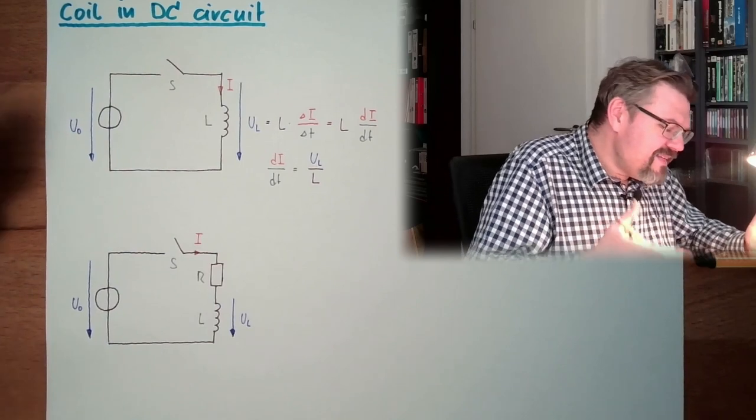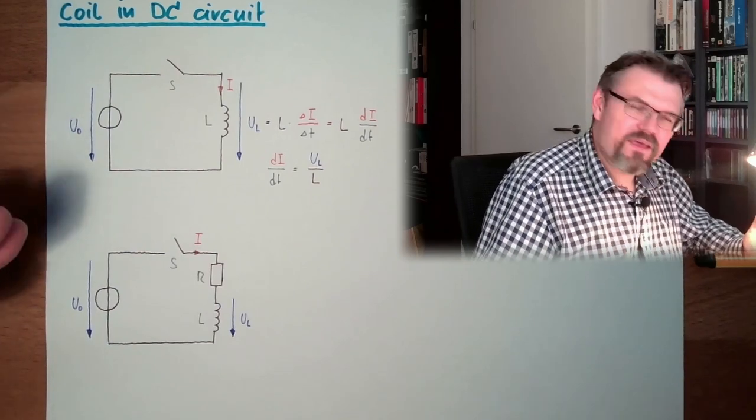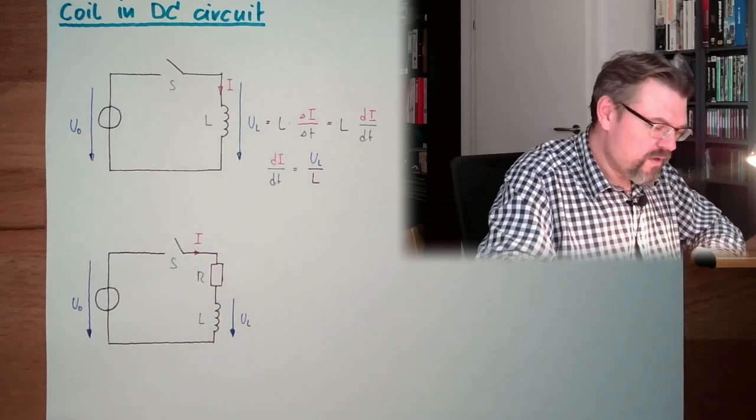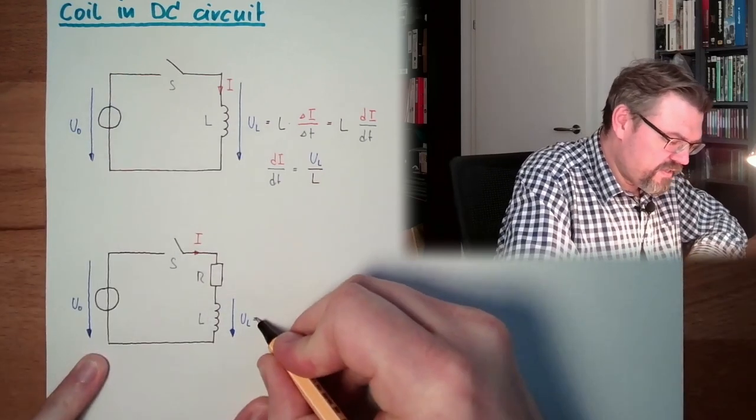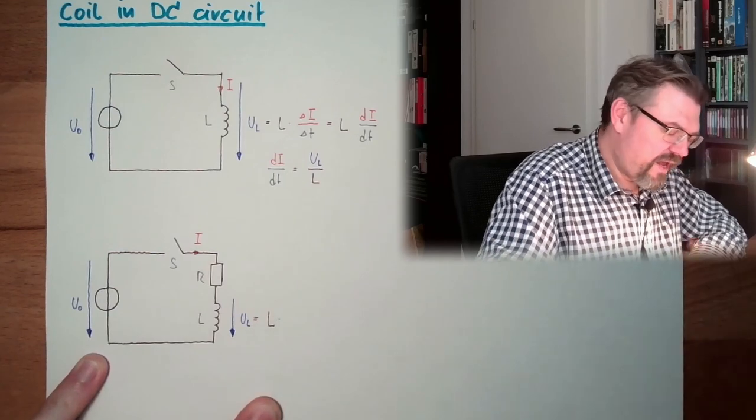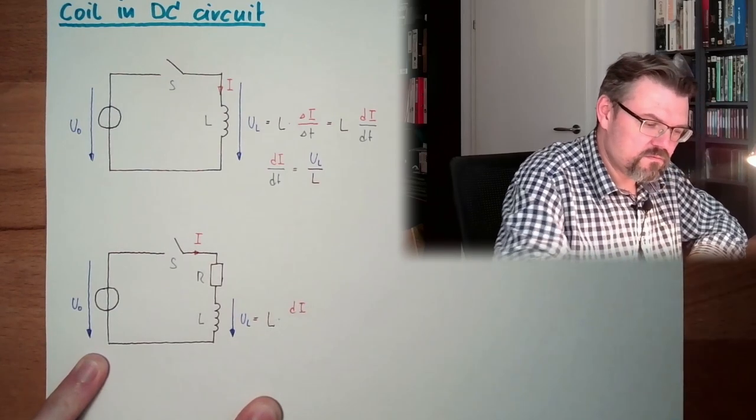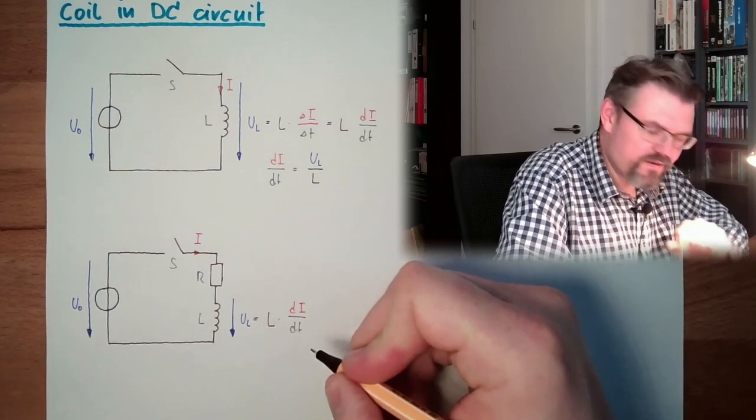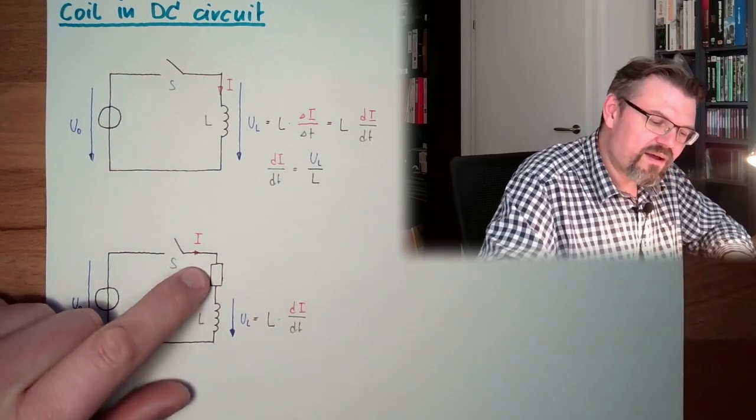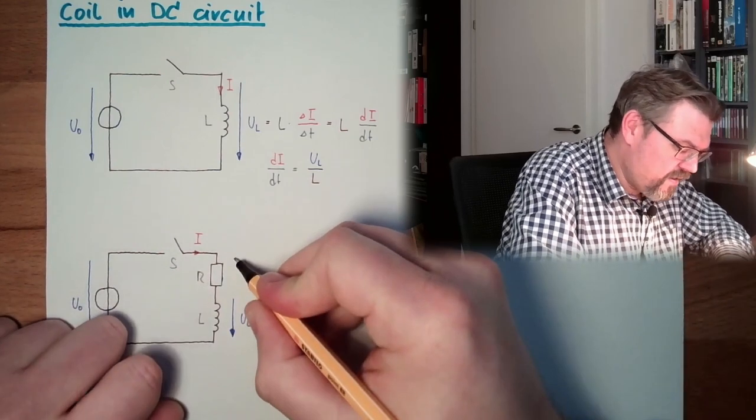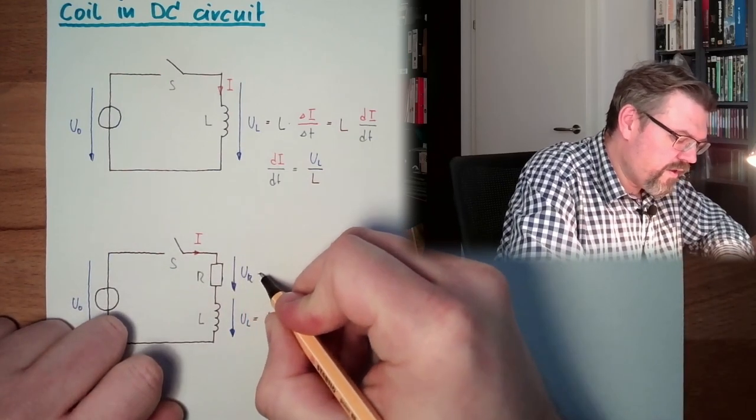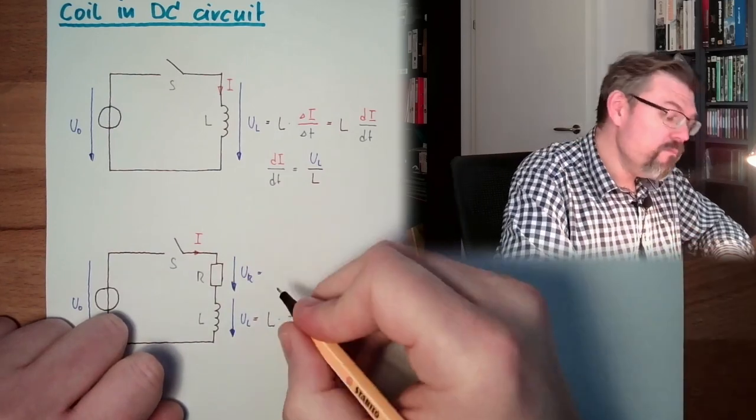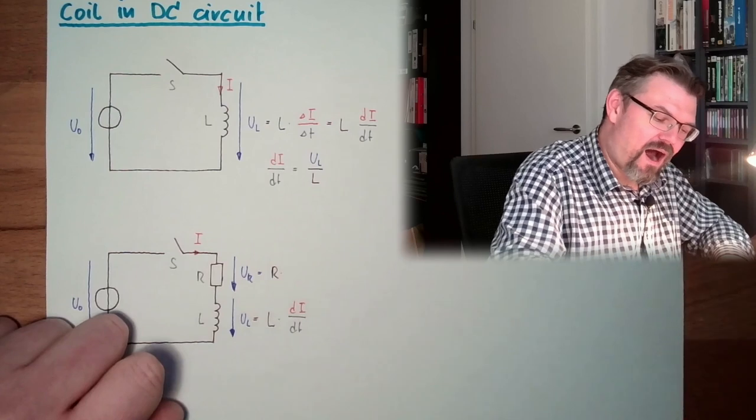And these are elements. They don't know nothing about the world. They are just reacting. So, the rule stays the same. So, here UL equals still L times the change rate of the current. Law of induction is still valid here. But we have another element in here. And here we have a UR. And this UR follows Ohm's law, which is, by the way, important, right? R times I. And now let's think again what is happening.